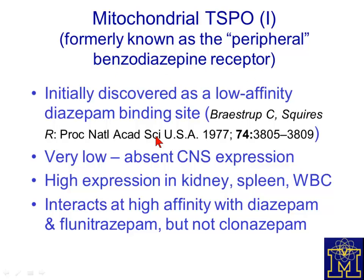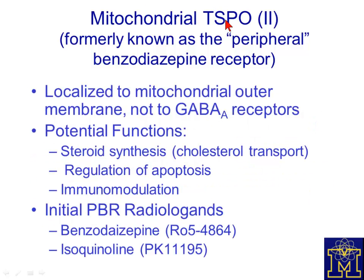The peripheral benzodiazepine receptor is expressed to a very high degree in the normal kidney, spleen, and white blood cells. It interacts at high affinity with diazepam and flunitrazepam, but clonazepam does not bind to this site — making it distinct from typical benzodiazepine recognition sites associated with GABA receptor complexes. Its localization on a subcellular level is to the mitochondrial outer membrane. Its biochemical function is partly in steroid hormone biosynthesis, transporting cholesterol into the mitochondrion, and may also be involved in regulation of apoptosis.